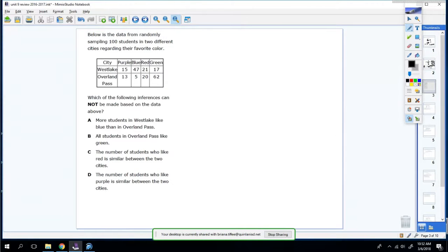Below is the data from randomly sampling 100 students in two different cities regarding their favorite color. Which of the following inferences cannot be made based on the data above? A, more students in Westlake like blue than Overland Pass. So here's blue. And so it says that is true, but we don't want a true one. B says all students in Overland Pass like green. Well, there's a lot of students that like green, but this says all students like green. Well, let's put a maybe.